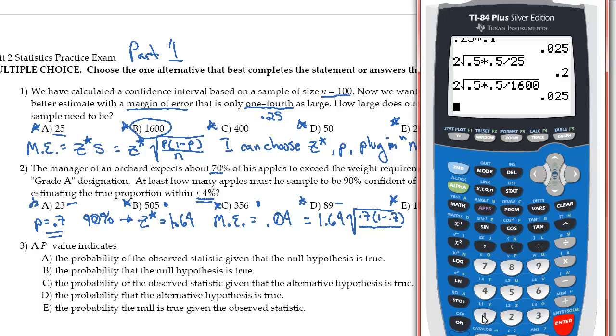I've got 1.64 times the square root of 0.7 times 1 minus 0.7 divided by 505, and I hit enter. And I get 3% margin of error. That's a 3% margin of error. That's pretty close.